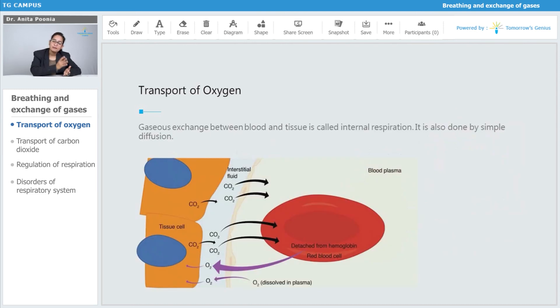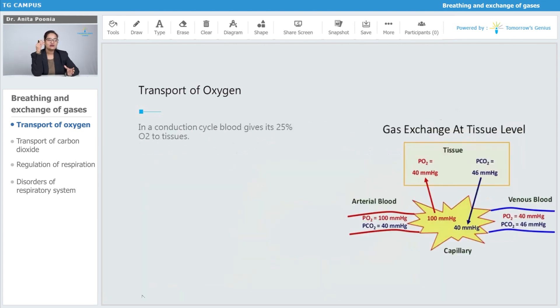Gaseous exchange between the blood and the tissue is called internal respiration, and it is also done by simple diffusion. It's a conduction cycle.